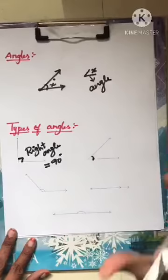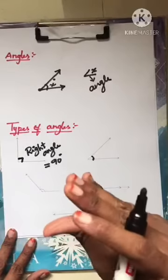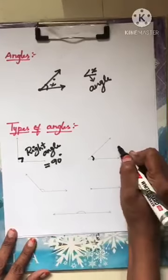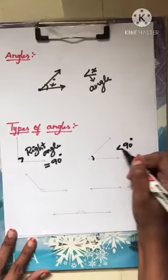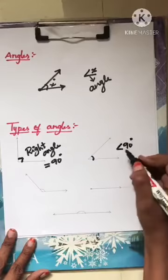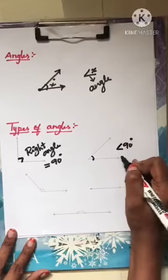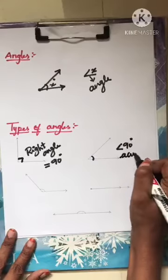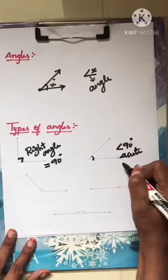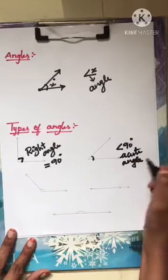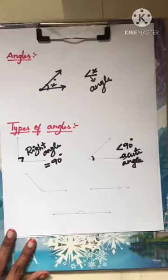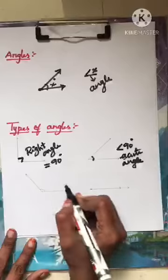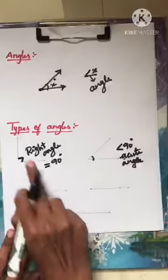Here the measure of the angle is small — it is less than 90 degrees. When the degree is less than 90, it is said to be an acute angle.